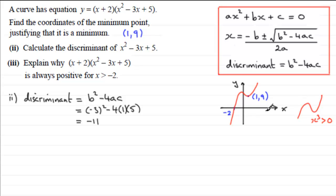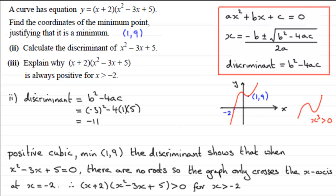Let's summarize those points. It's a positive cubic. The minimum's at (1, 9). The discriminant shows that when x squared minus 3x plus 5 equals 0, there are no roots, so the graph only crosses the x-axis at x equals minus 2. Therefore, our equation for our graph has to be greater than 0 for x greater than minus 2.